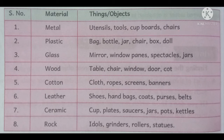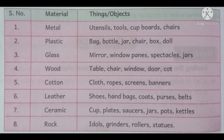The next one is plastic. By using plastic, we can prepare bags, bottles, jars, chairs, boxes, dolls, etc. The next one is glass. By using glass, we can prepare mirrors, window panes, spectacles, jars, etc.